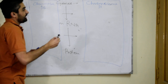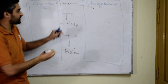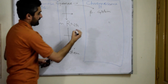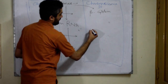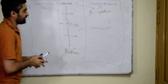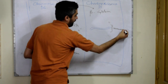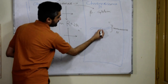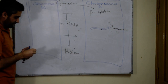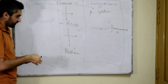On chromosome number 11, genes are present. Chromosome number 11 contains the genes of beta-globin. There are two genes present on chromosome number 11. On the other hand, chromosome number 16 contains four genes — these are the alpha-globin genes.